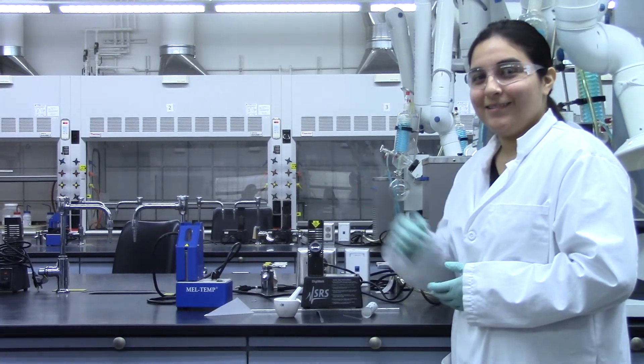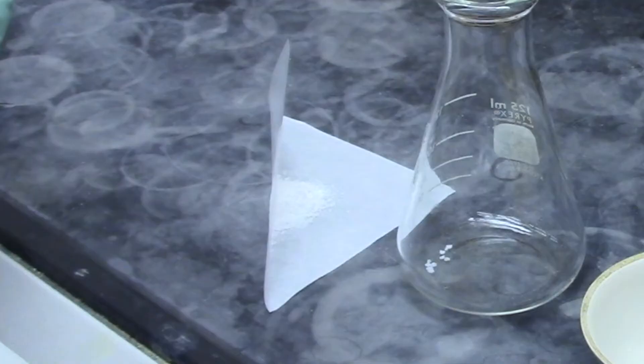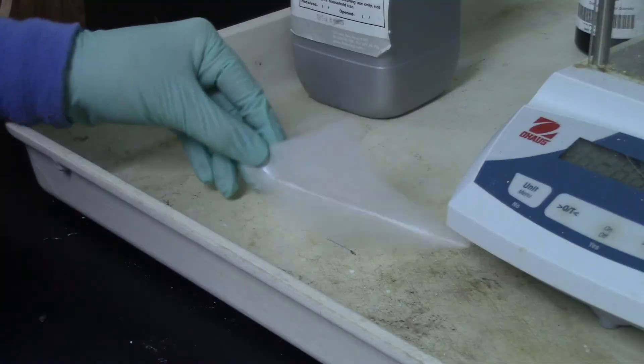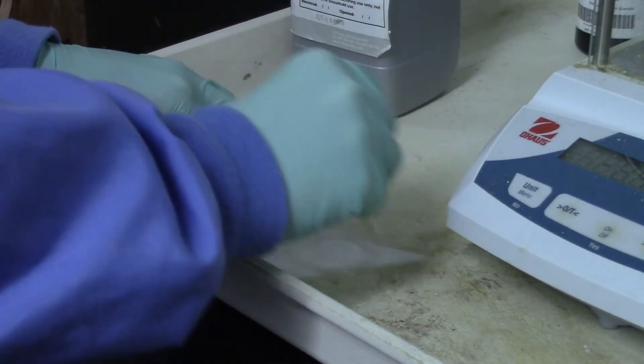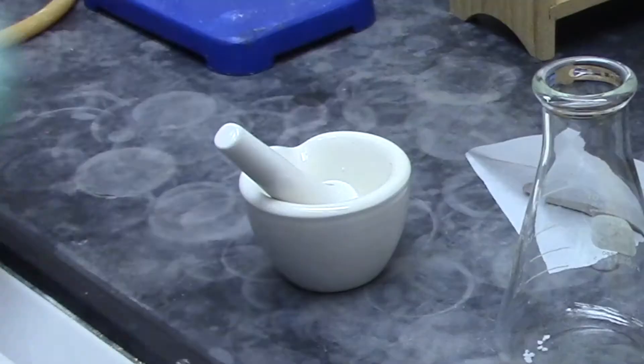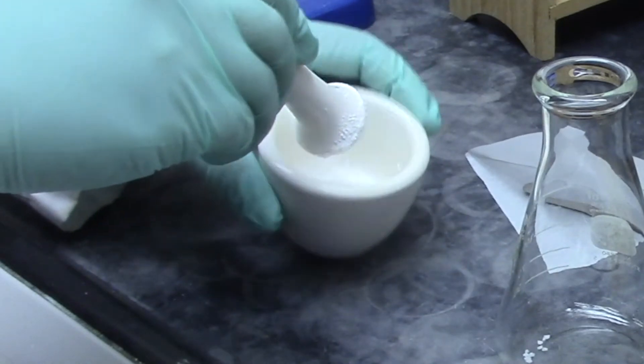To load the capillary tube, the sample must first be crushed into a fine powder. Place some of the crystals onto a piece of paper and use a beaker to grind them. Alternatively, the compound can be crushed in a mortar with a pestle.